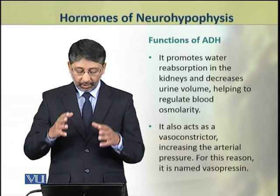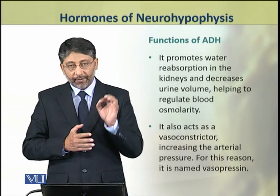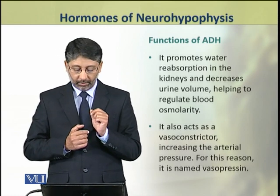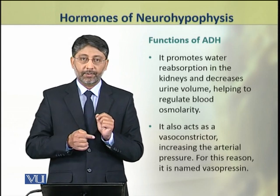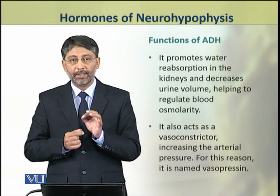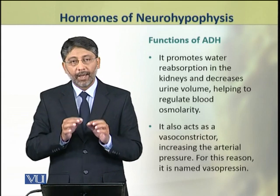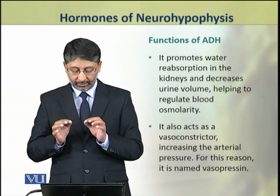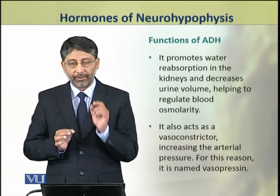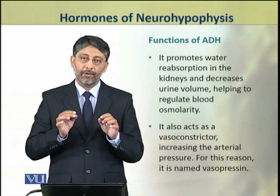The antidiuretic hormone promotes water reabsorption in the kidneys. As a result, it decreases urine volume. By these processes, it helps to regulate the osmolarity of blood. It also acts as a vasoconstrictor, increasing the arterial blood pressure. For this reason, it is named as vasopressin.